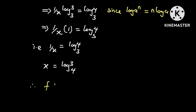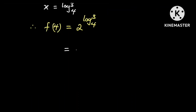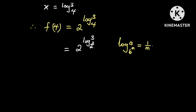Therefore, f of 4 is equal to 2 raised to the power of log of 3 to the base 4. And this is equal to 2 raised to the power of log of 3 to the base 2 raised to the power 2. But recall that the log of a to the base b raised to the power n is equal to 1 over n multiplied by the log of a to the base b. So this is equal to 2 raised to the power of one half multiplied by the log of 3 to the base 2.